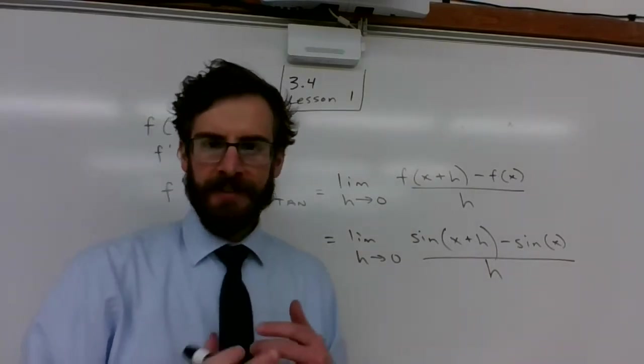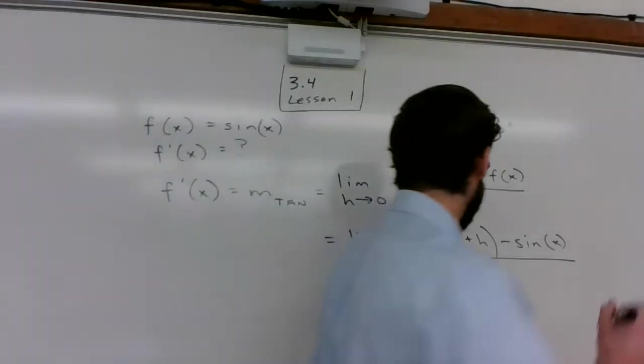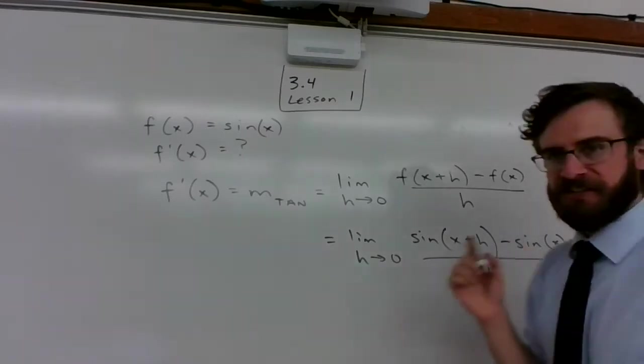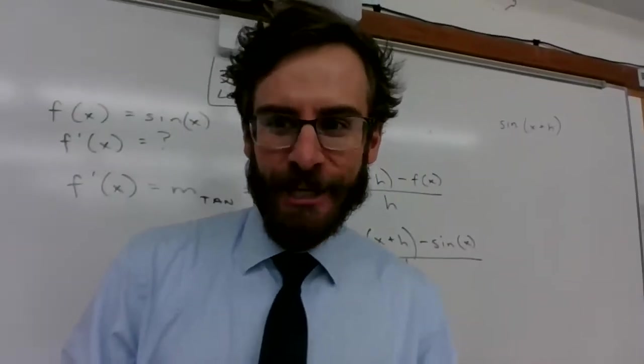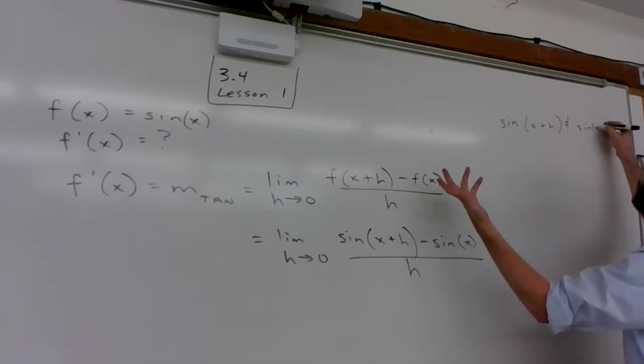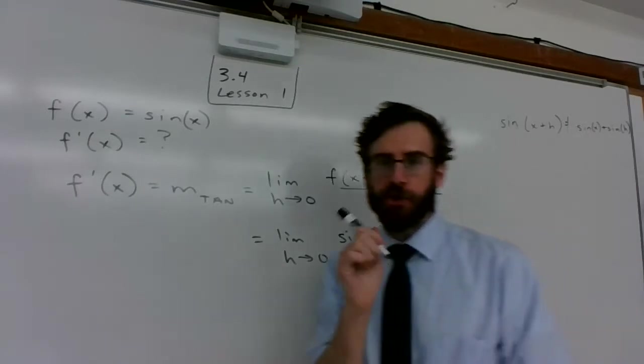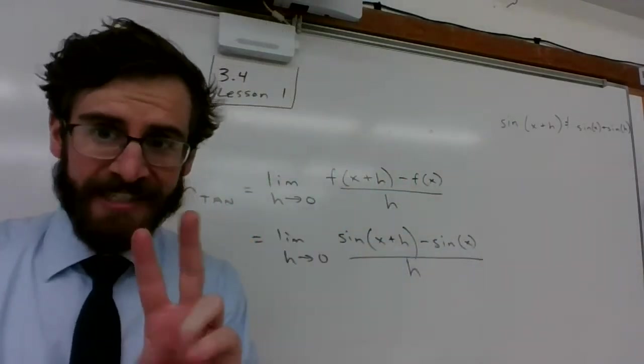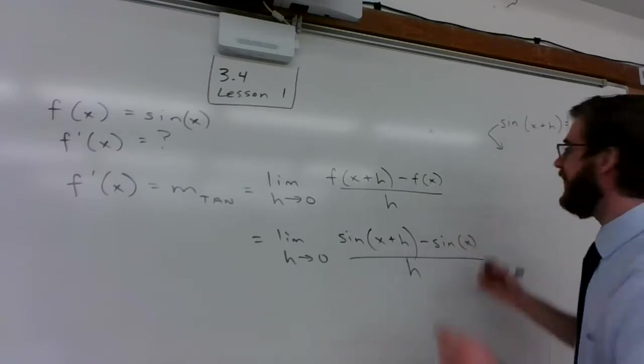All right. Now, this is where we kind of are stuck. So it seems. Hopefully, you guys remember that sine of x plus h does not equal sine of x plus sine of h. It doesn't have a distributive property for sine. This is not true. You saw it last year when we did trig proof. If you have two things added together inside of a sine, then you use the sum formula for sine.